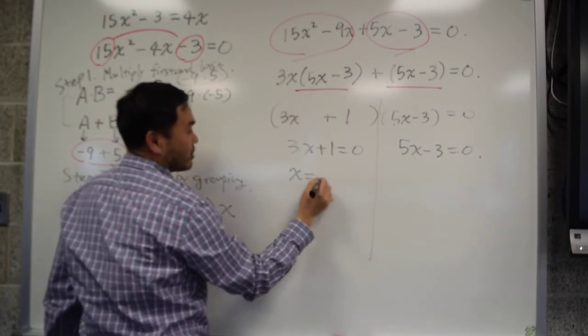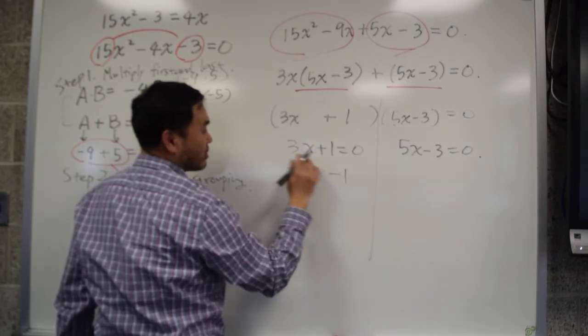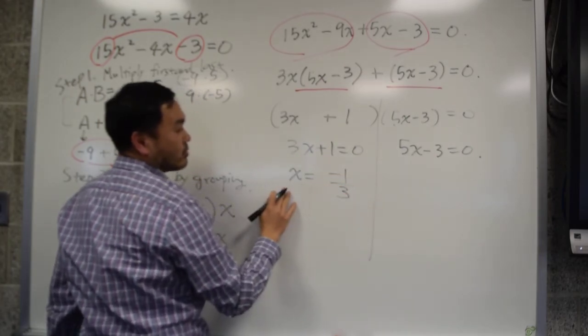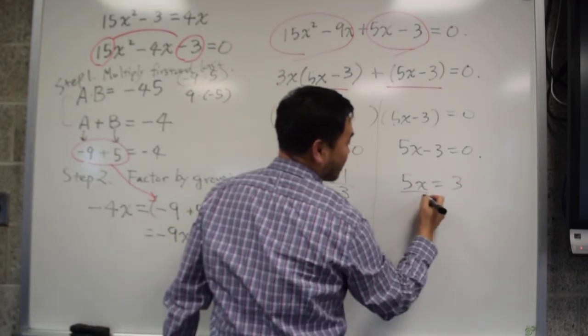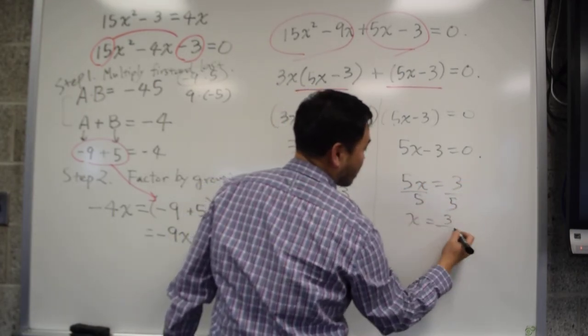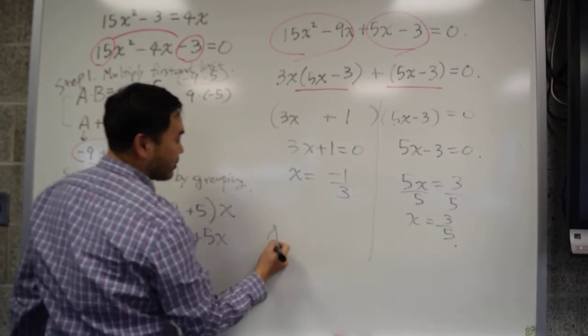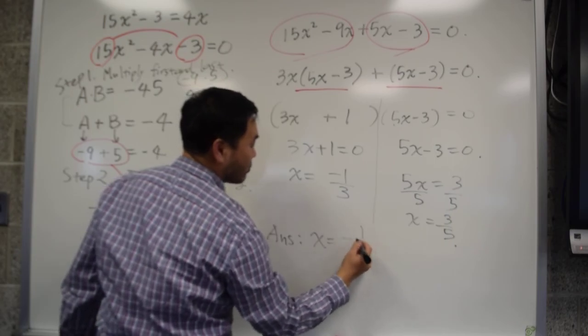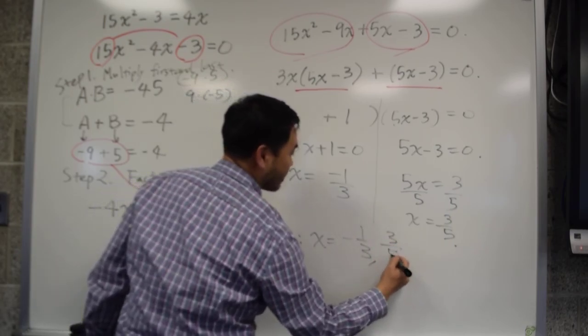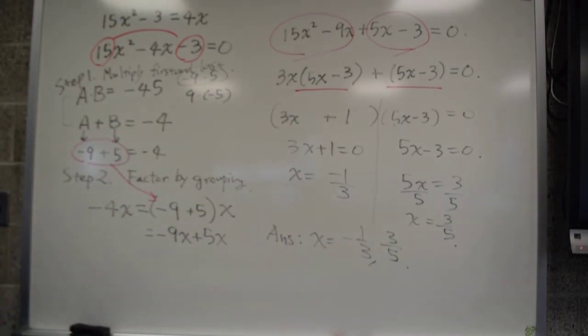So that means x is, you subtract 1 both sides and divide by 3, so it's negative 1 third. You add 3 both sides and divide by 5, so x is 3 over 5. And therefore the answer is x equal to negative 1 third, 3 over 5. So that's how you factor by grouping.